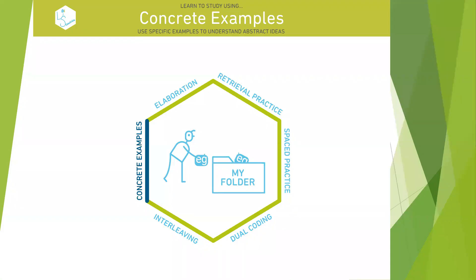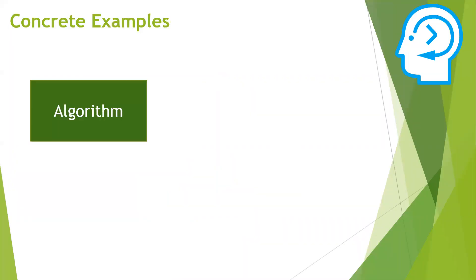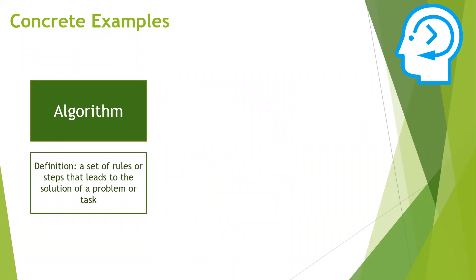Let me give you an example of how to use concrete examples in your learning. Let's say the teacher is trying to explain to you what an algorithm is. They could start with a definition and say: an algorithm is a set of rules or steps that leads to the solution of a problem or a task. This may already help you understand the concept of algorithm a bit better.